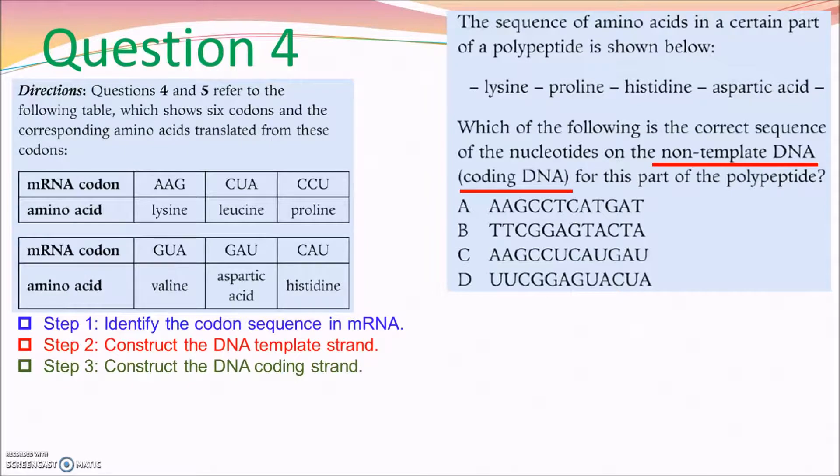In question 4, a mRNA codon table is given. The question asks for the coding strand DNA. I shall show you two ways for doing this question. But before I show you, we can eliminate the options C and D. Since we are looking for the DNA strand, there should be no base uracil. There should be no U, so they are wrong.